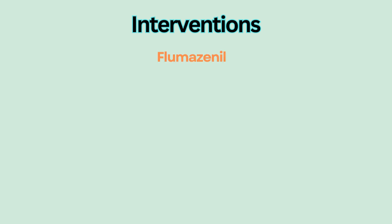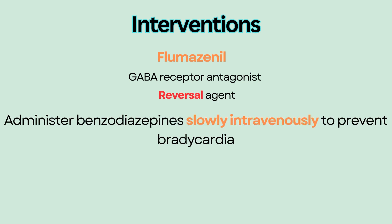Flumazenil is a GABA receptor antagonist that is used for reversal of the sedative effects caused by benzodiazepines. If given intravenously, administer it slowly to prevent bradycardia.